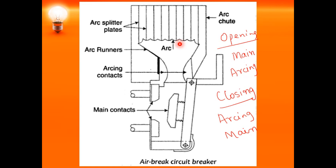In air break circuit breakers, air is at atmospheric pressure. They are used in DC and AC circuits up to 12 kV and are suitable for the control of power station auxiliaries and industrial plants. Since air is at atmospheric pressure, no compressors are needed, and since there is no arc quenching medium like oil or gas, there is no need for replacement. The fire hazard is also not present. They can be used up to 12 to 15 kV.